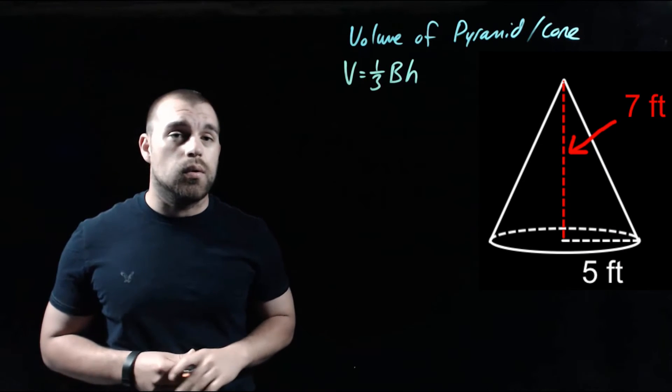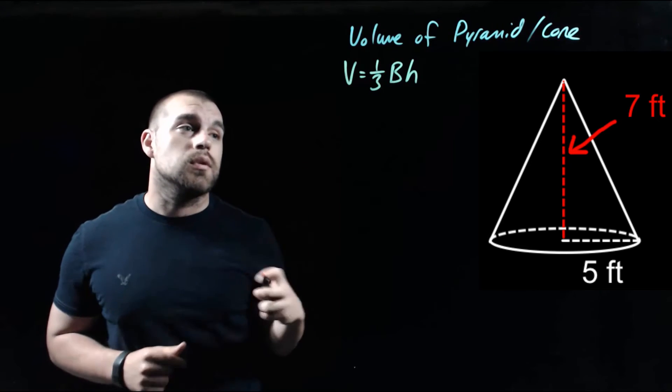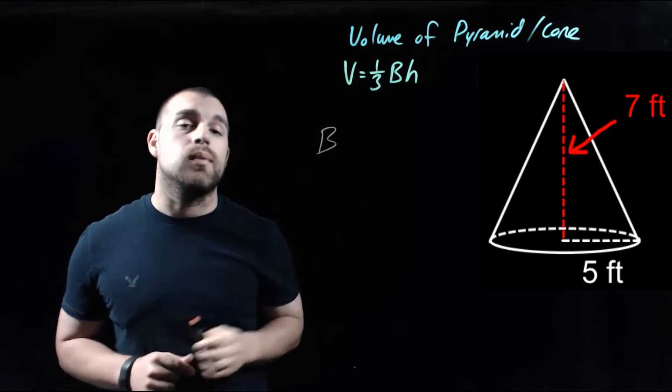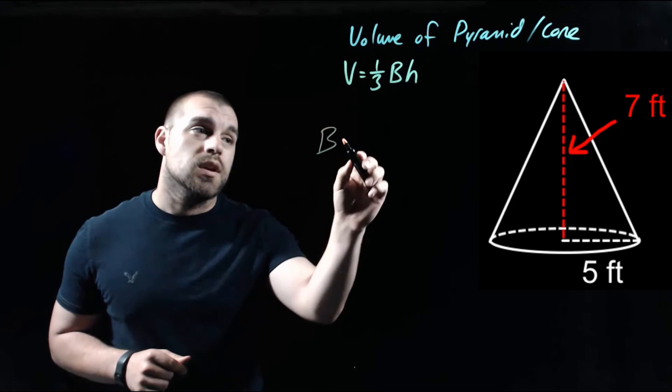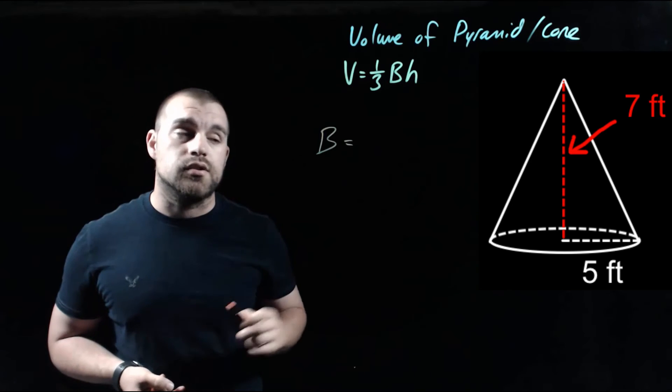Example two is a cone. We've got a radius of five feet and our height is seven feet. So as we're looking at finding our volume, first thing we need is the area of the base. Since our base figure is now a circle with the cone, we have to do pi times the radius squared.